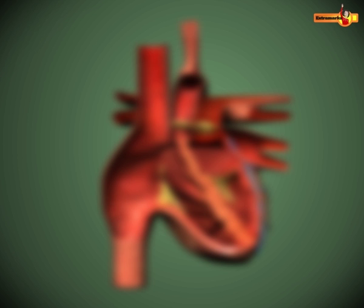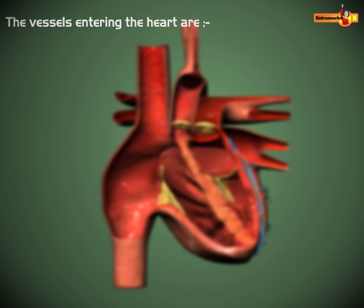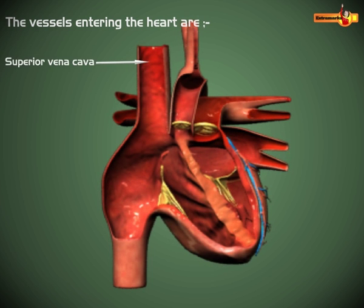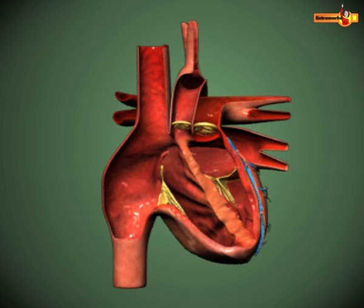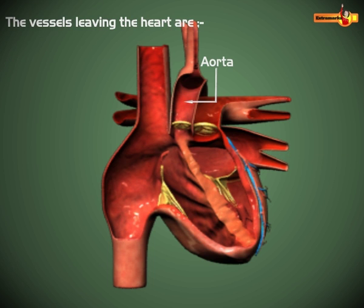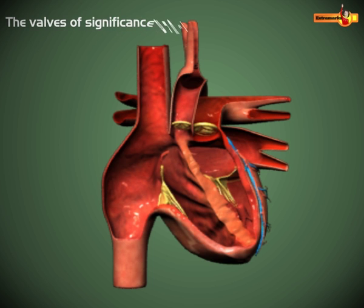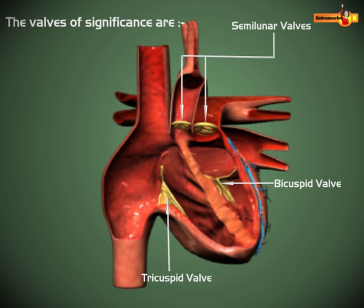Taking an overall view of the internal structure of the heart, the vessels entering the heart are the superior vena cava, inferior vena cava, and pulmonary veins. The vessels leaving the heart are the aorta and pulmonary artery. The valves of significance are the tricuspid valve, bicuspid valve, and the two semilunar valves.